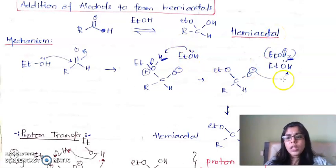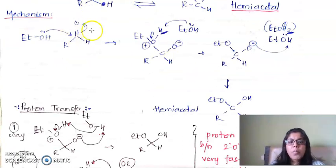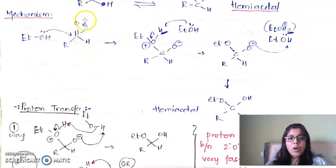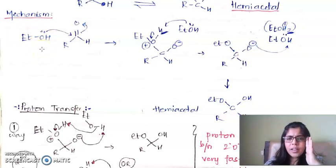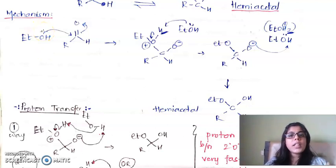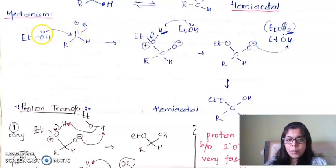The mechanism of this reaction: the carbonyl group of the aldehyde R-C=O has oxygen which is electron rich and pulls electrons toward itself, making the carbon electron deficient. Ethanol dissociates very weakly into H⁺ and EtO⁻. The EtO⁻, being electron rich, goes and donates its electrons to the electron-deficient carbonyl carbon, forming a new bond from oxygen to carbon.